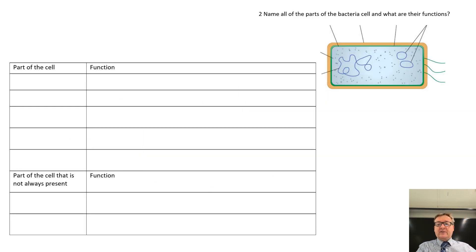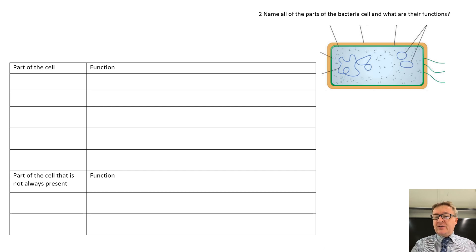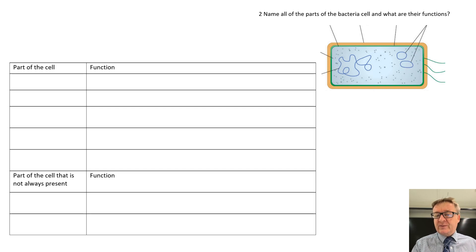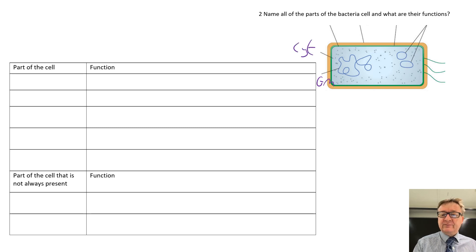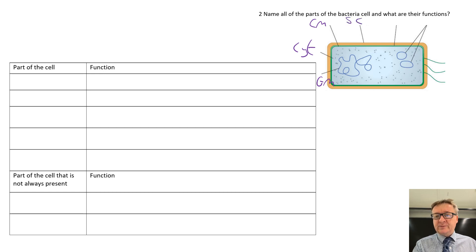Then what we've got is bacteria cells. Name all the parts of the bacteria cell and what are their functions. So we've got: genetic material, cytoplasm, the inner wall is the cell membrane, the very outer wall is the slime capsule, then the wall in between is the cell wall, then we've got plasmids, and flagella around the outside.